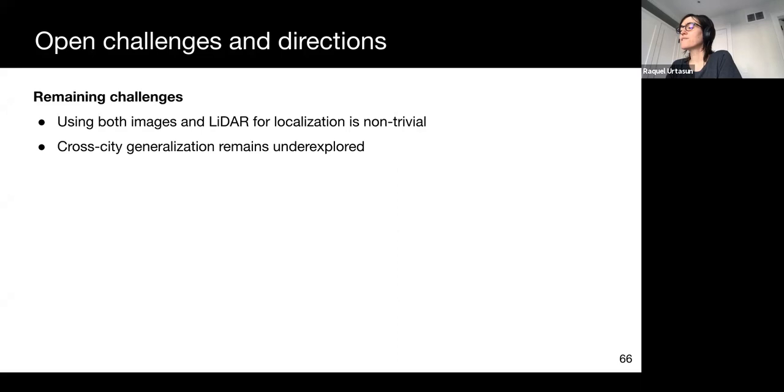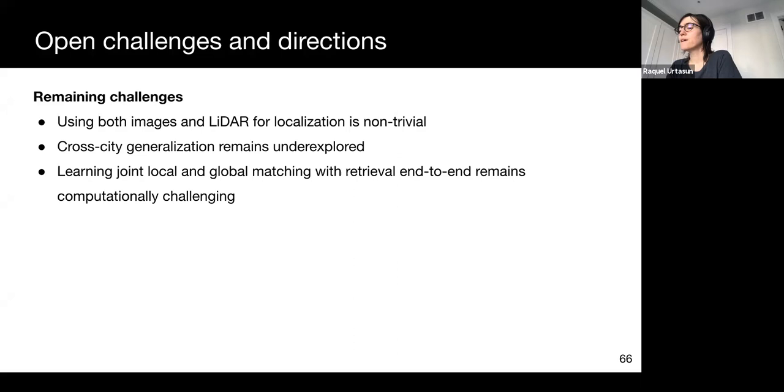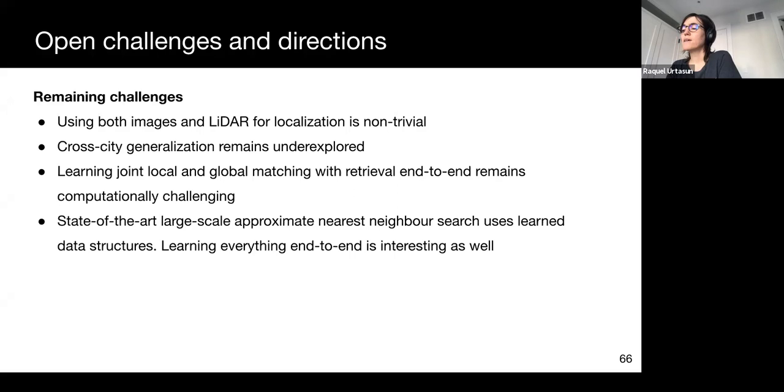Exploring generalization of these methods to multiple cities also remains unexplored. For example, we would like to train on a city on the East Coast and be able to generalize to cities on the West Coast, or even across continents. We would also like to explore systems that do both global and continuous localization.